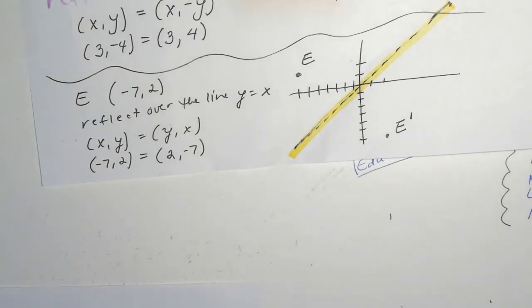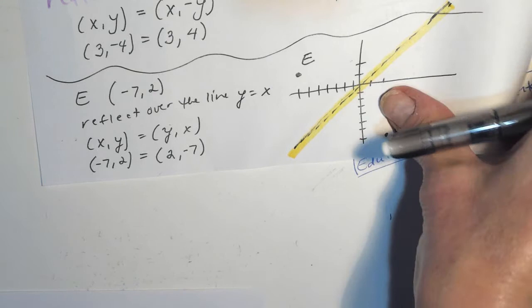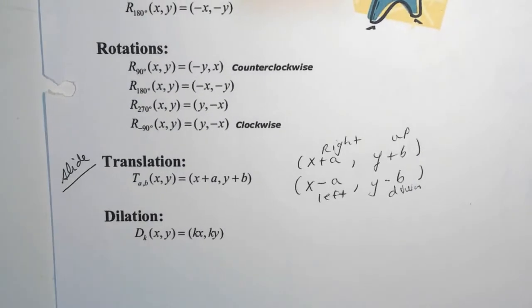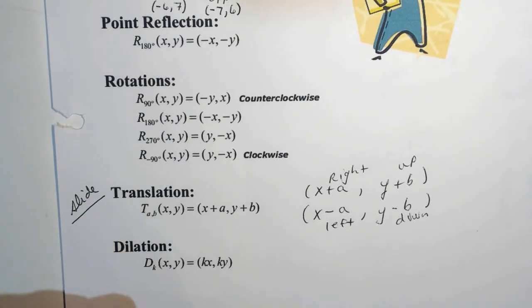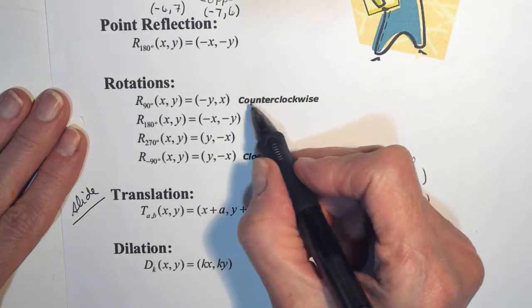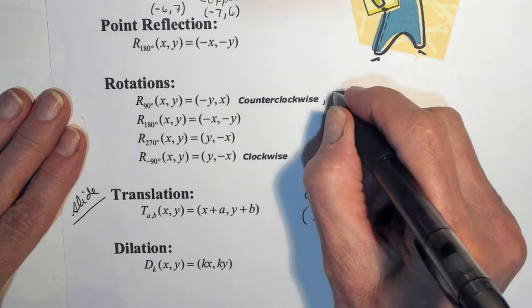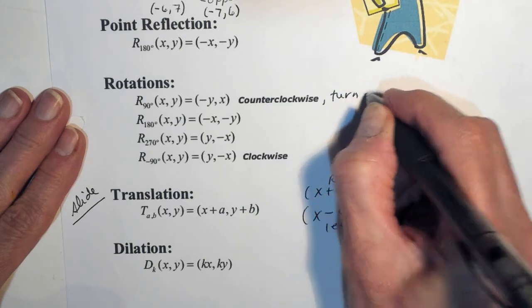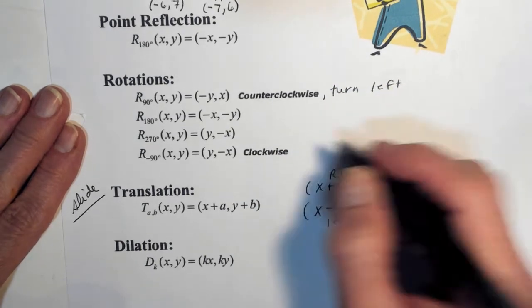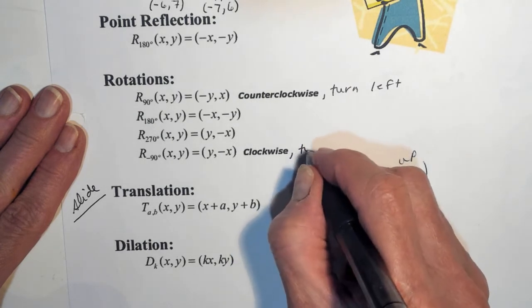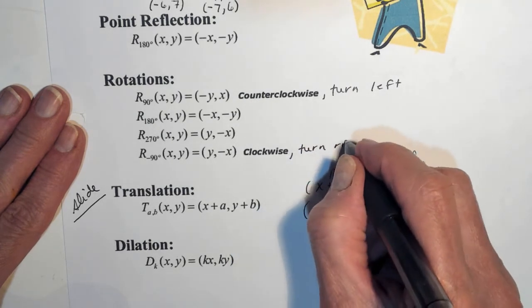So that's what we did before the break — translations and reflections, and then we had a quiz. Today we're going to do rotations. You can turn things clockwise or counterclockwise. Counterclockwise means you're turning to the left, and clockwise means you're turning to the right.